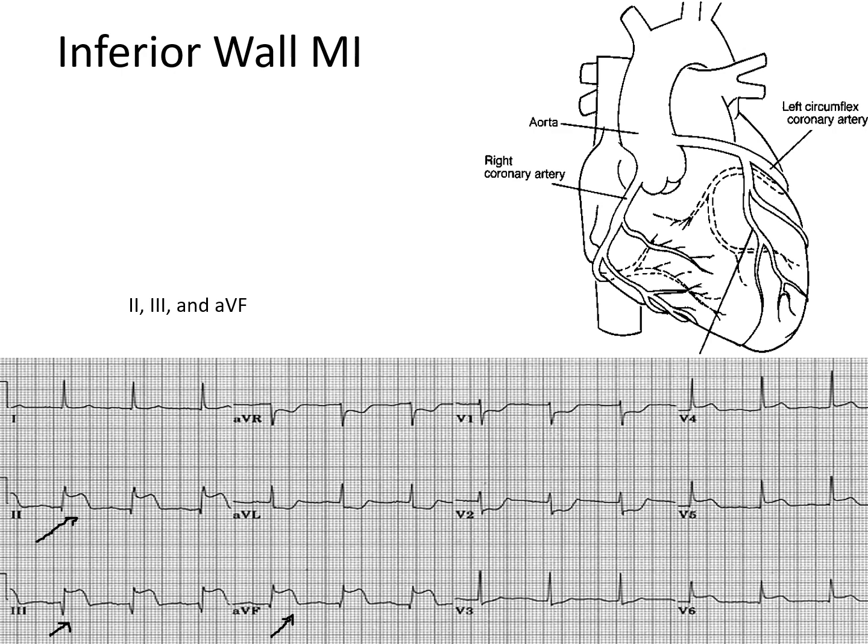Right coronary artery blockage can cause an inferior wall MI, seen as ST segment elevation on ECG in leads 2, 3, and AVF.